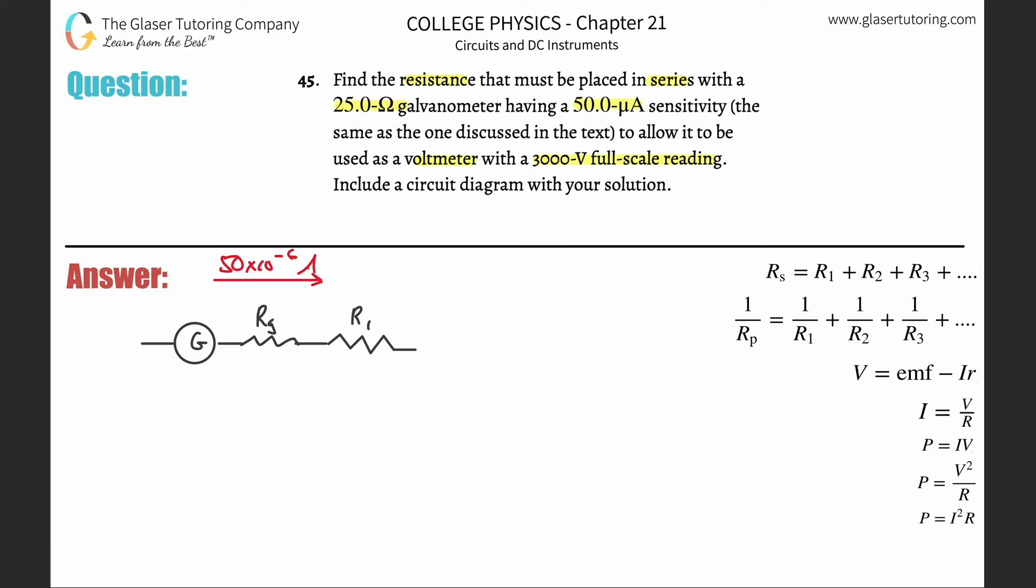We need that in amps, so just do the conversion: 50 times 10 to the minus 6 amps. We know that this resistance here, they told it to us actually, the galvanometer resistance is going to be 25 ohms.